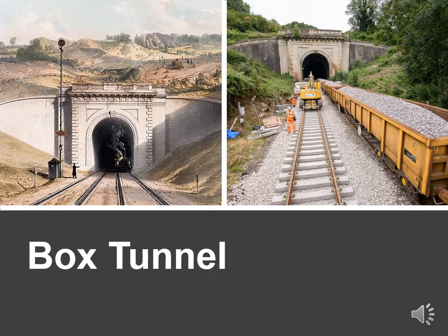Box Tunnel passes through Box Hill on the Great Western Main Line between Bath and Chippenham. The railway tunnel is 1.83 miles or 2.95 kilometres in length. It's straight and descends on a 1 in 100 gradient from its eastern end. The portals are listed. Box Tunnel was constructed between December 1838 and June 1841 for the Great Western Railway, under the direction of Isambard Brunel. The main contractor was George Burge from Herne Bay. When completed, it was the world's longest railway tunnel.